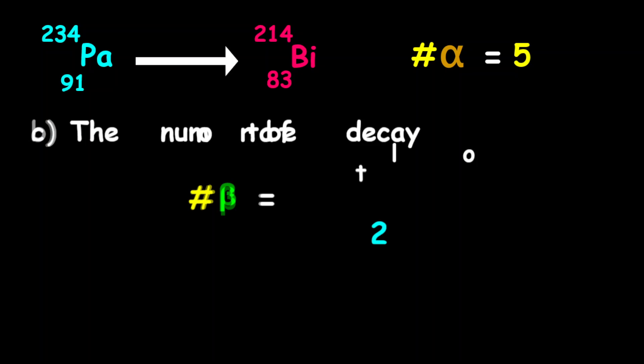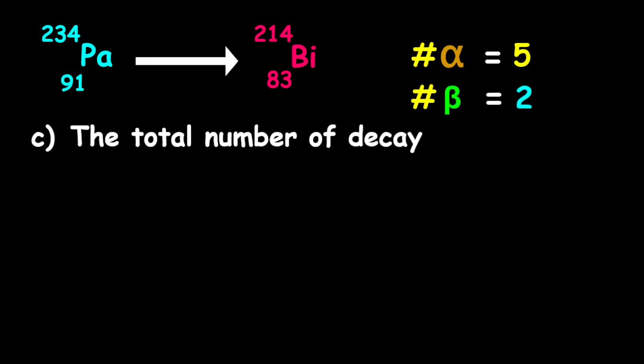Now, the next part of the question asks us to find the total number of decay. And of course, this becomes really obvious, because if we have five alpha and two beta, what we're going to have here is a total of seven decays.